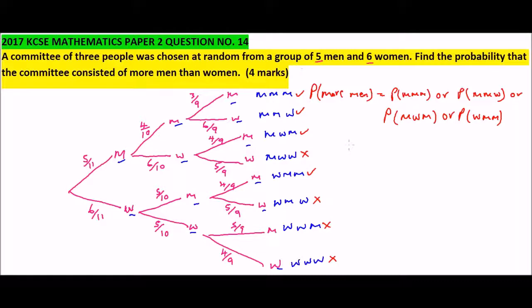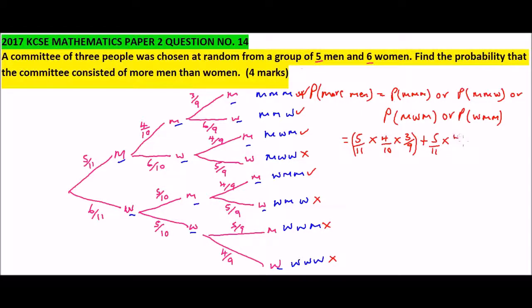We now write the probability. The probability that the committee has more men equals the probability of three men, plus the probability of man-man-woman, plus the probability of man-woman-man, plus the probability of woman-man-man. In numbers: (5/11 × 4/10 × 3/9) + (5/11 × 4/10 × 6/9) + (5/11 × 6/10 × 4/9).